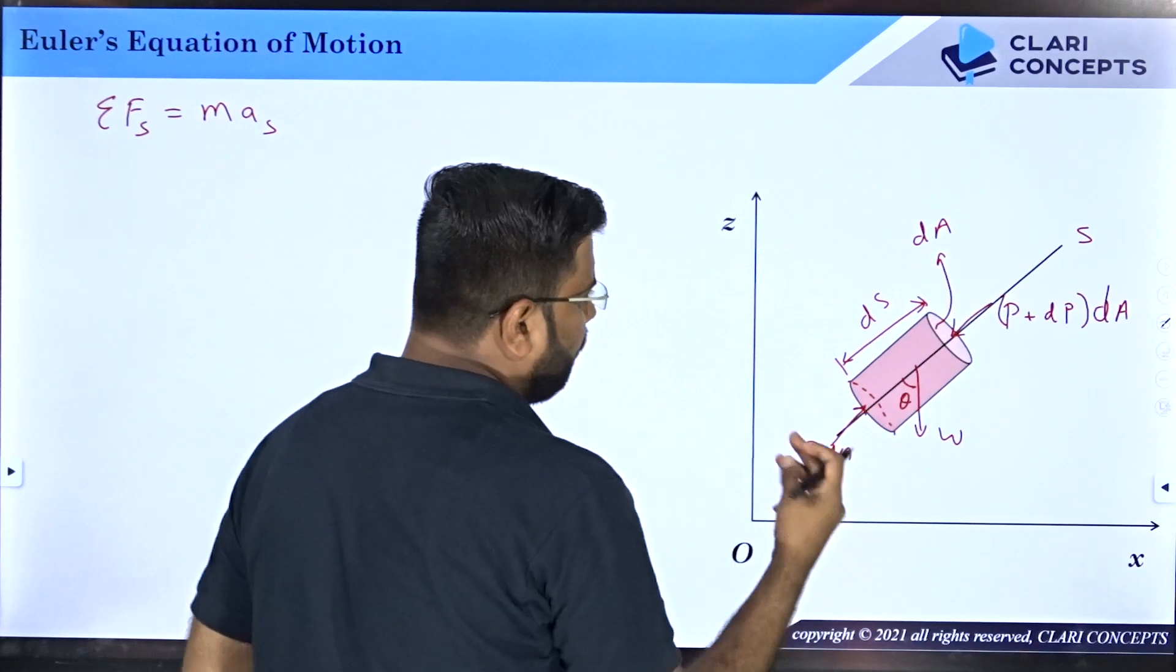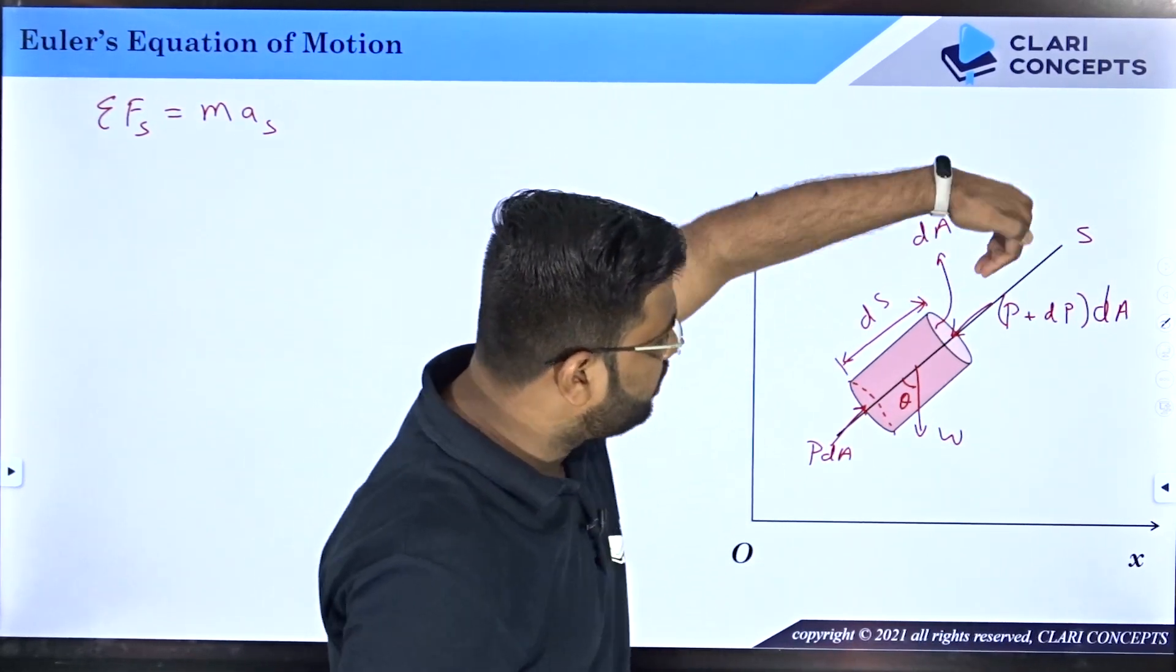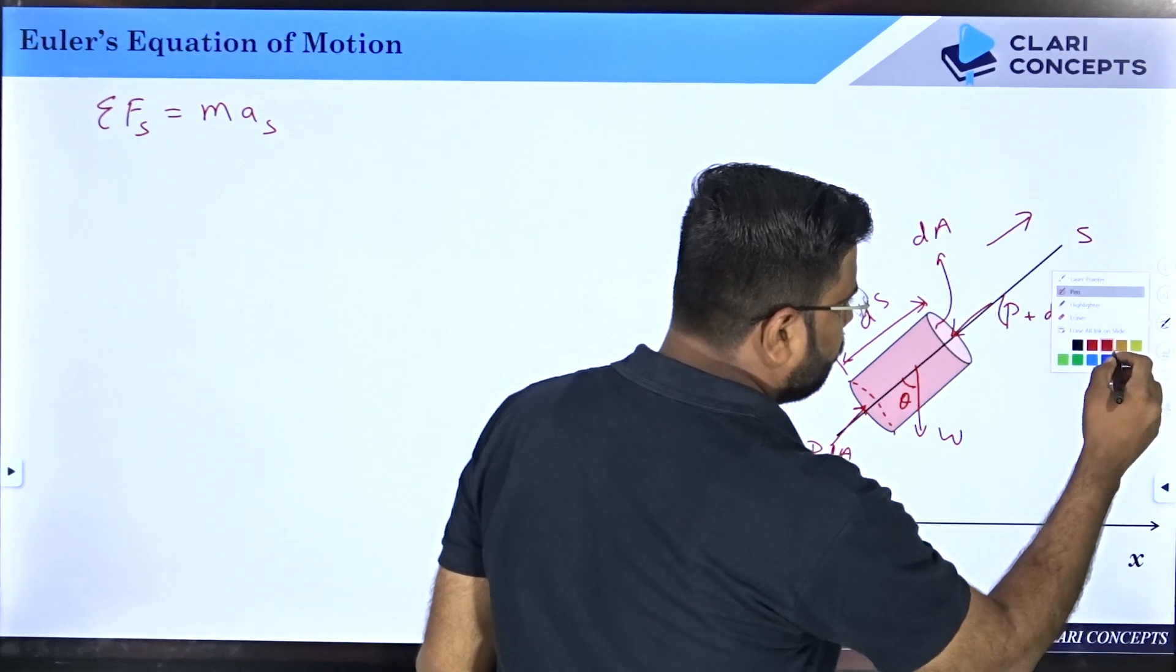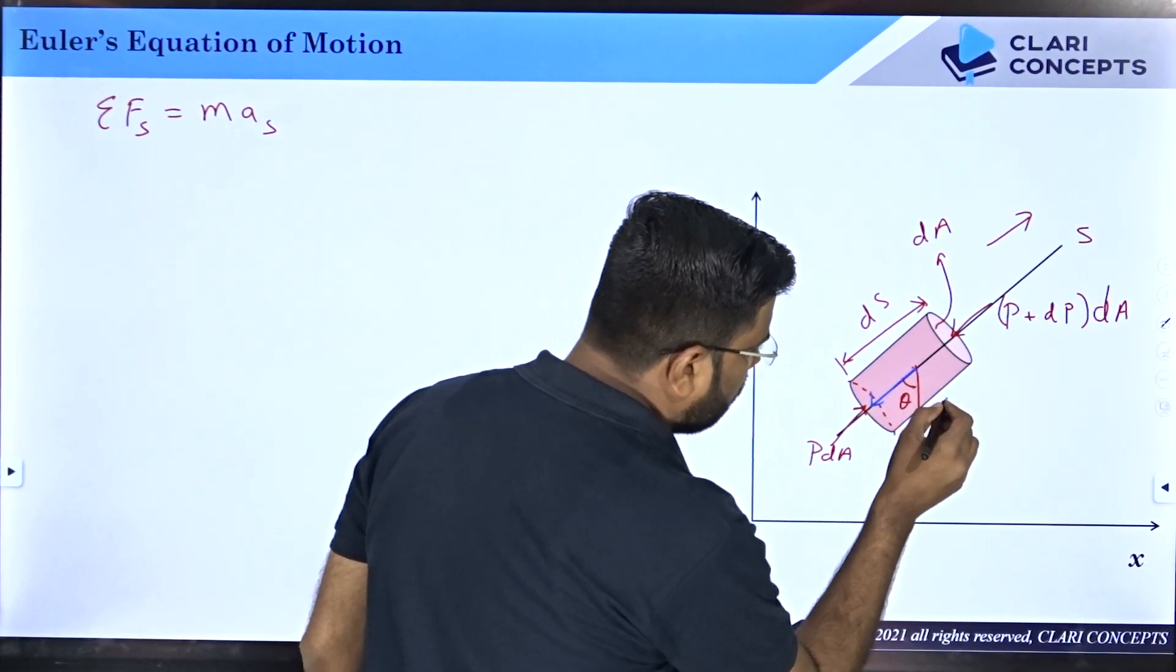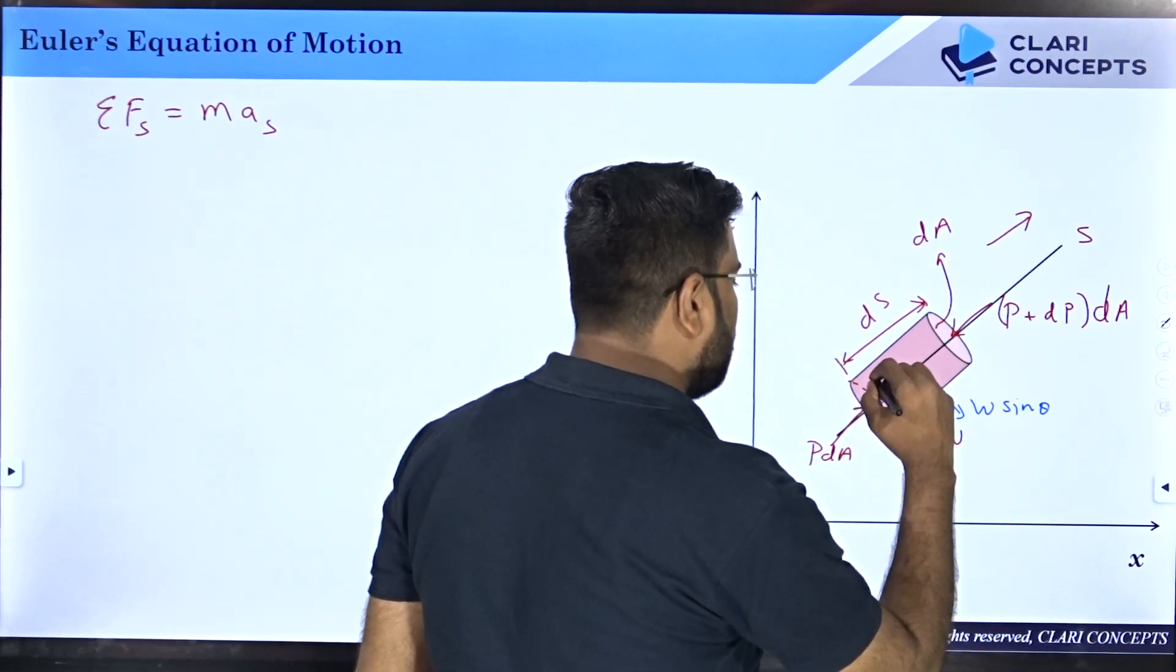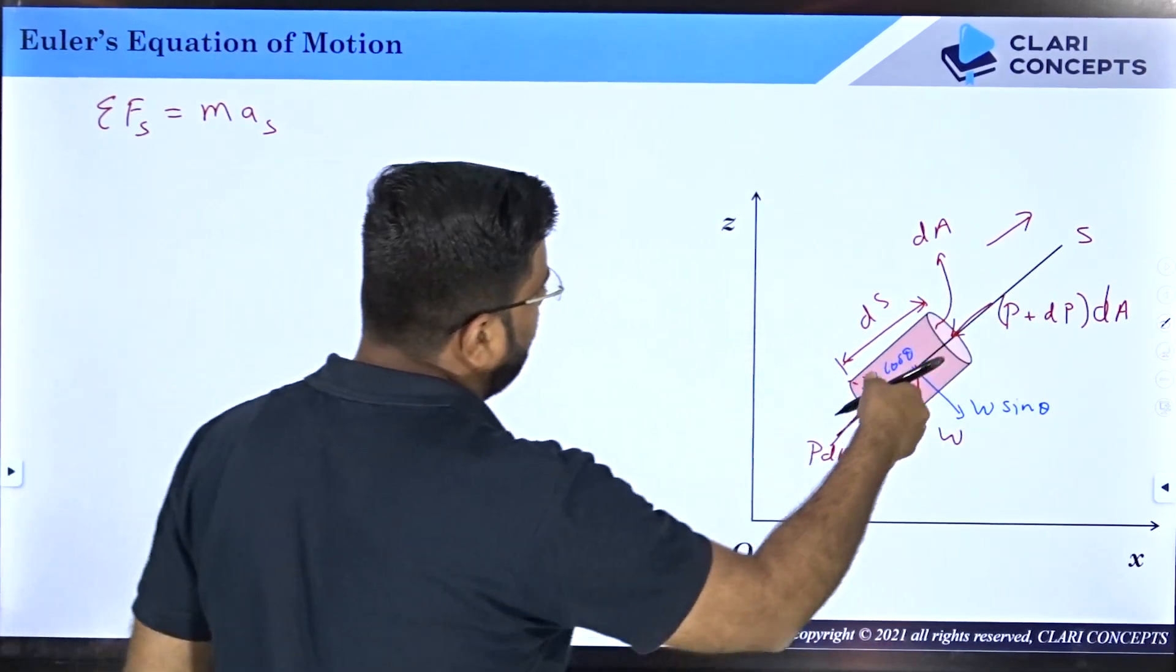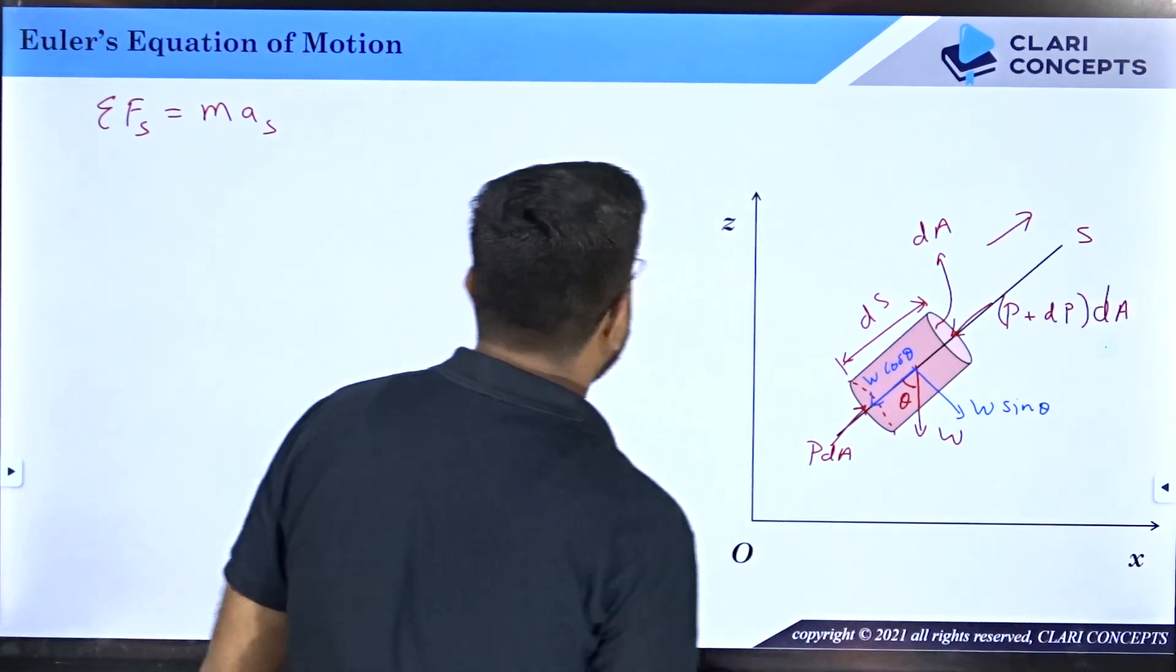Now multiply by area to get the force. This is the pressure force. Now if S is positive in this direction, then this force is positive and this is negative because it is opposite to S. But what about weight force? Weight can be resolved into two components. This normal component will be W sin theta and this component will be W cos theta. The sin theta component will not play a role in the S direction. Only W cos theta will play a role.